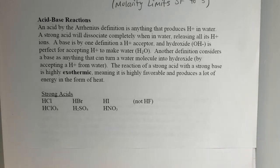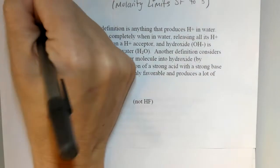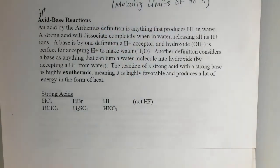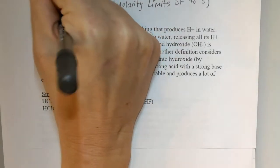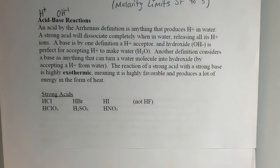All right, so our second type of double displacement reactions are acid-base reactions. We probably remember from nomenclature an acid starts with H in front. Base always means, at least for intro and chem 1, hydroxide.